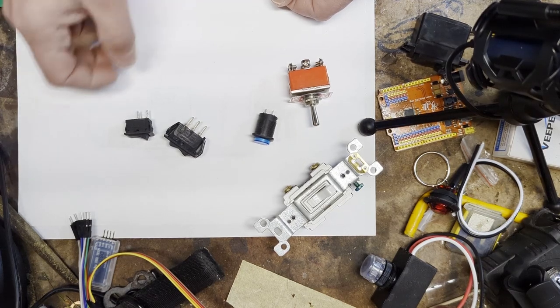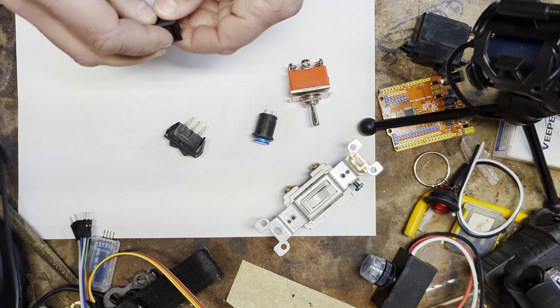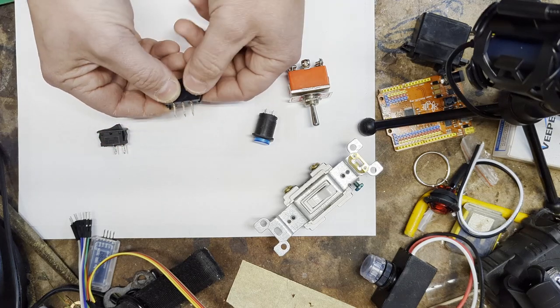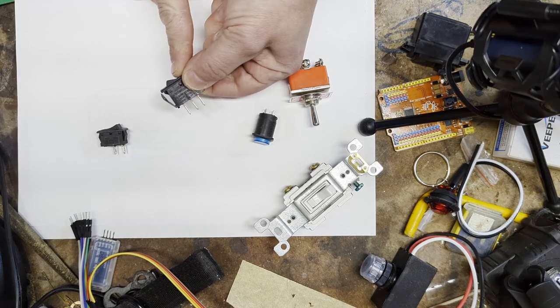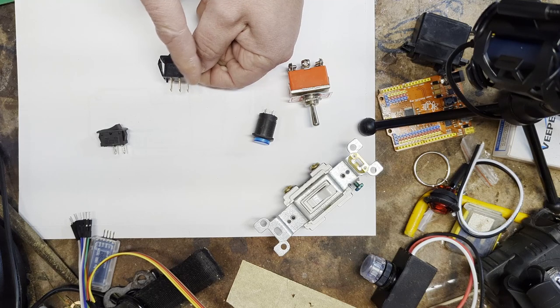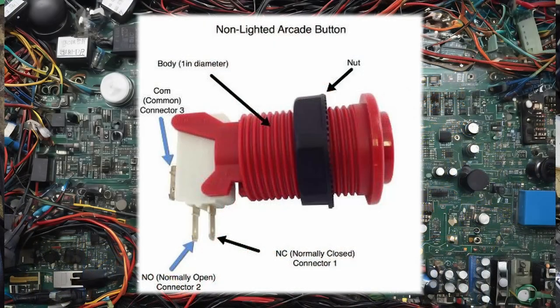The most common switch or button has just two contacts — pushing or flipping the button will connect and disconnect the two contacts. The next most common has three contacts, usually with two separate states such as left or right, with a middle and an off. This connects the middle contactor, referred to as COM, to either of the outer pins. This is very common in video game buttons where the middle is labeled COM and the other two are labeled NO and NC — normally open and normally closed. Normally open means when you're not pushing the button that contactor is not connected to COM; normally closed means it normally is connected to COM and pushing the switch will open that connection.